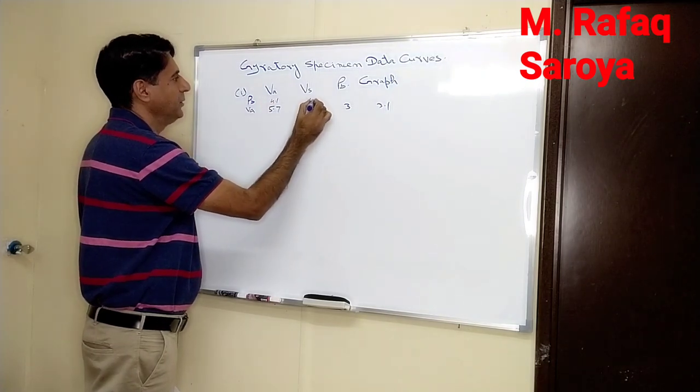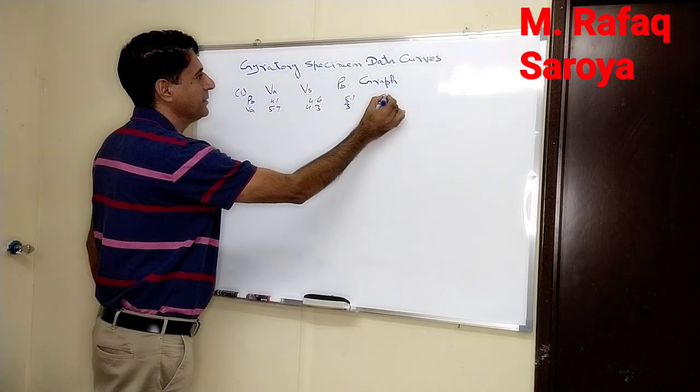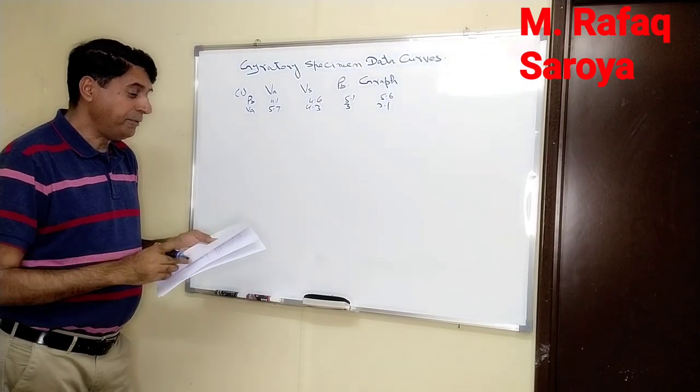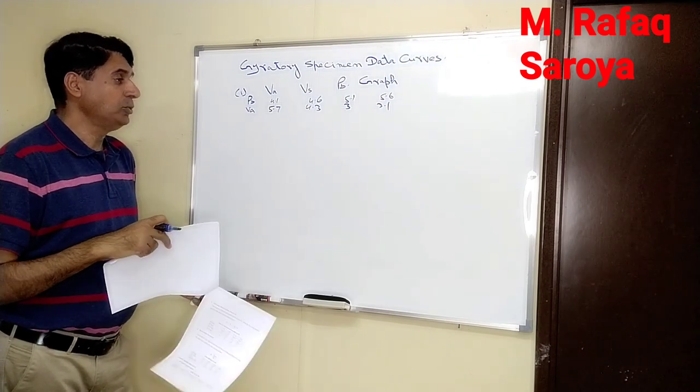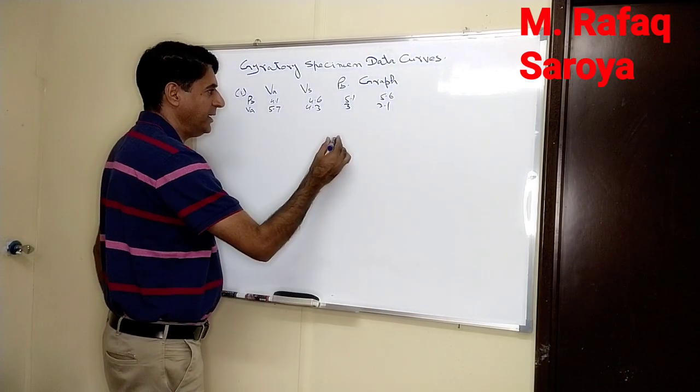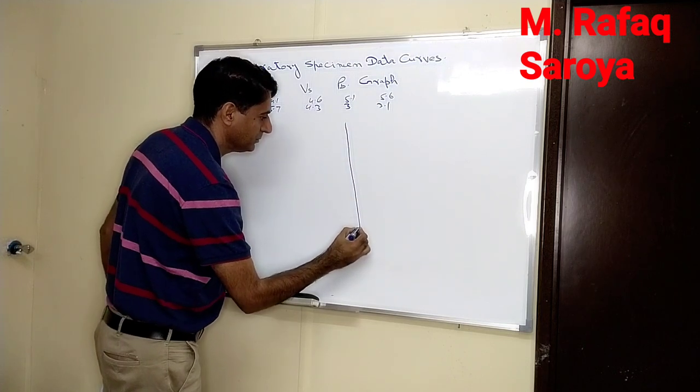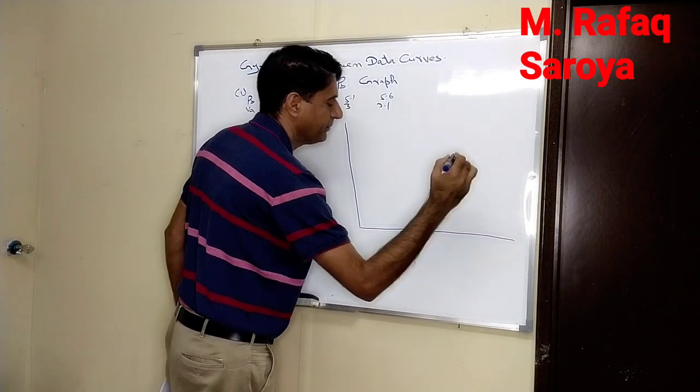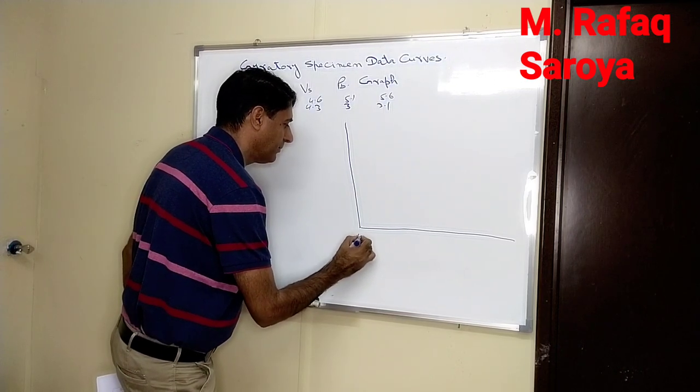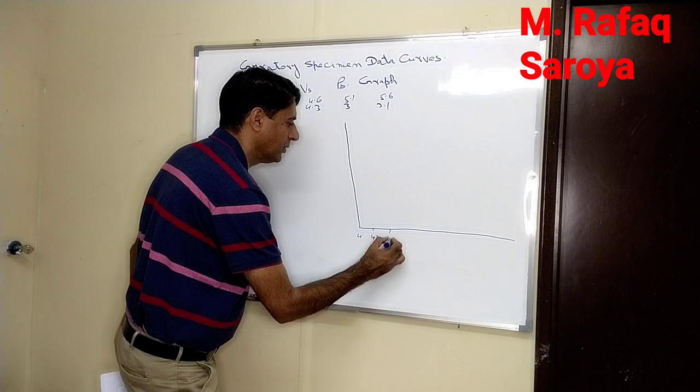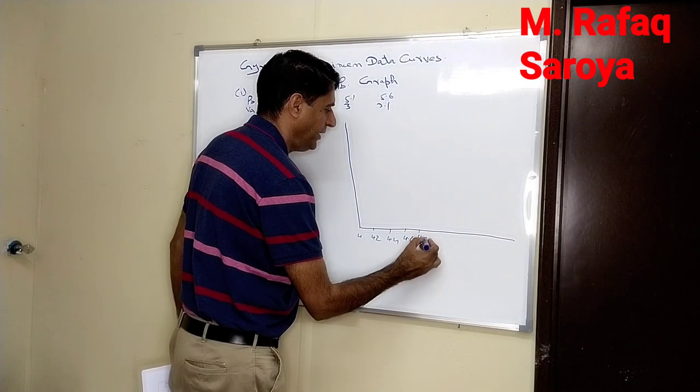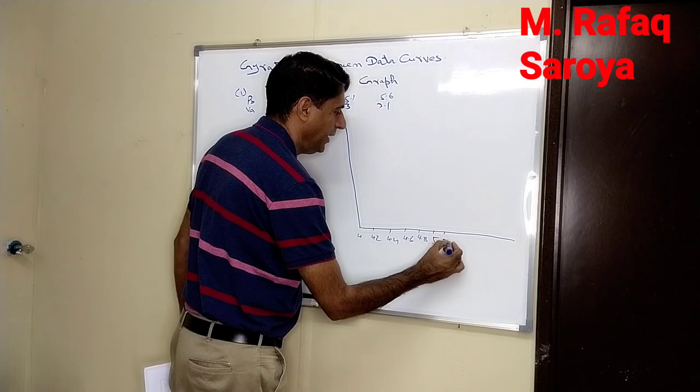Now I will draw the graph. This is the first graph which we have to consider. You will have to take special consideration. The x-axis scale: 4.2, 4.4, 4.6, 4.8, 5.0, 5.2, 5.4, 5.6.